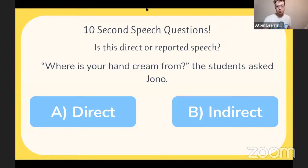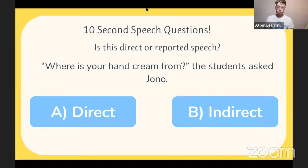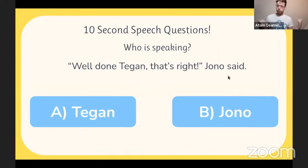I'm ending the poll now. The majority — 143 of you — went for answer option A, and quite right: it is direct speech. We've got our speech marks, or quotation marks, or 'bunny ears,' telling us that we're using the exact words said: 'Where is your hand cream from?' — question mark within the bunny ears, as we covered yesterday. The reporting clause 'the students ask Jono' tells us who said what.